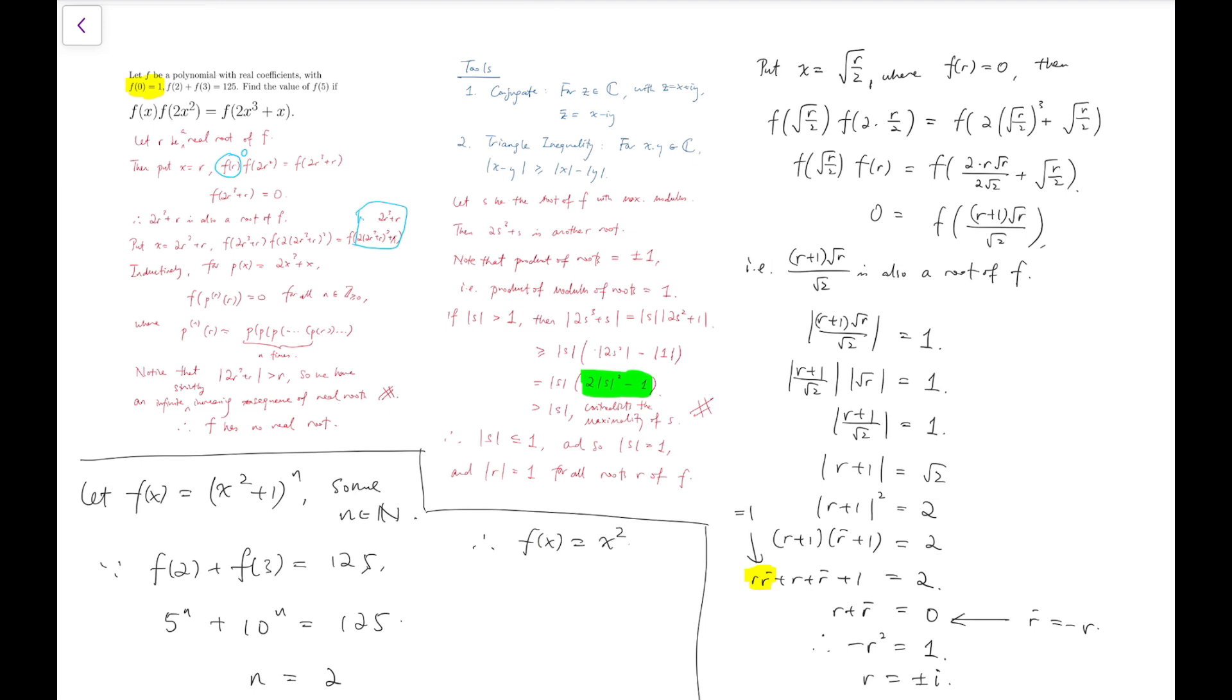So therefore f(x) is equal to (x² + 1)². Of course you can check by putting that into f. I shall omit this in this video. You can check it yourself. And finally so f(5) = (5² + 1)² = 676. And that's our final answer.